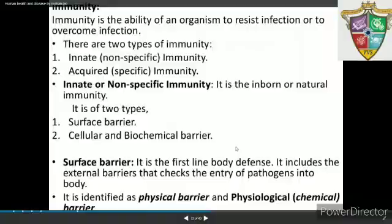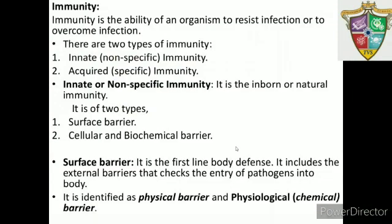In today's session for class 12 biology chapter 8, Human Health and Diseases, we are going to study about immunity. Immunity or disease resistance can be defined as the ability of an organism to recognize foreign material that enters the body and to mobilize the cells and cell products to specifically remove that foreign material. Immunity is of two types: innate or inborn immunity, and acquired or adaptive immunity.